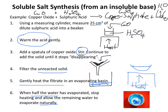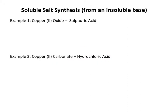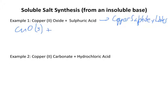Looking at equations for reactions like this: copper oxide plus sulphuric acid forms copper sulphate and water. The valency of oxide is 2 (oxygen is in group 6), and copper also has a valency of 2, so it's CuO (solid). Sulphuric acid — H₂SO₄ — has been dissolved in water so it's aqueous.